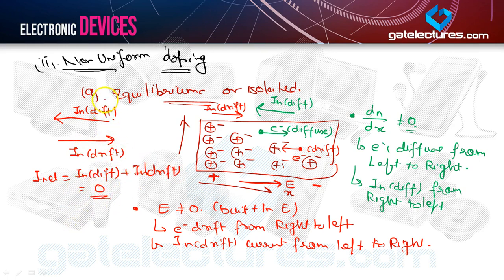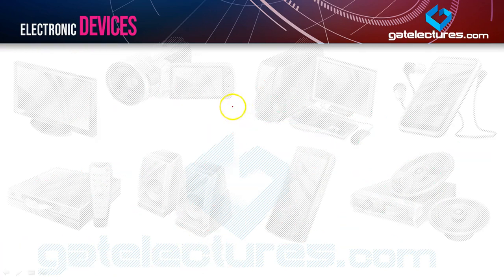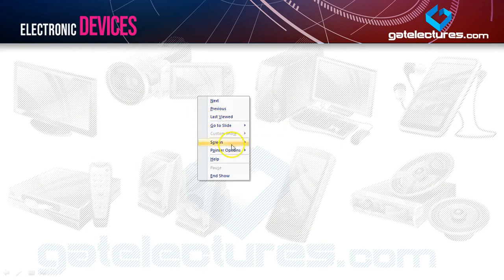Since I_drift and I_diffusion cancel each other as they are in opposite directions, and since nothing is connected from the outside — neither a voltage source nor a current source — net current is 0 amperes.